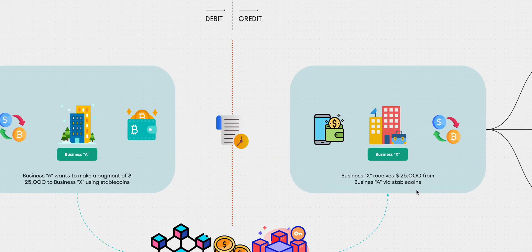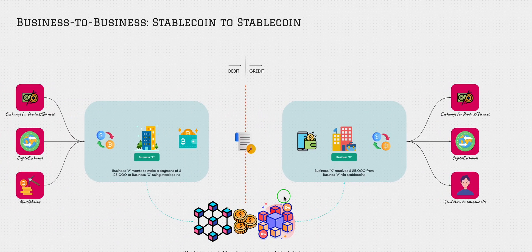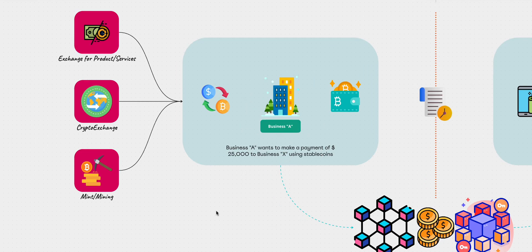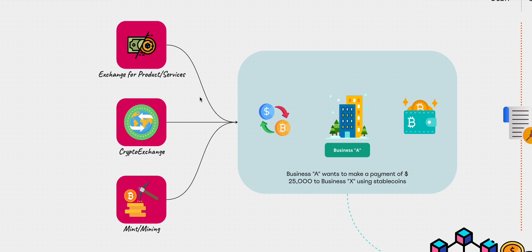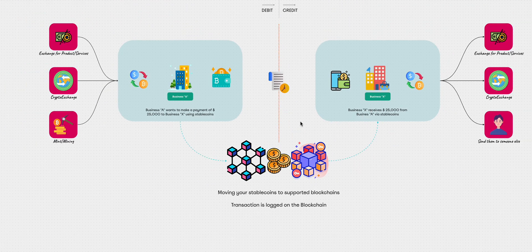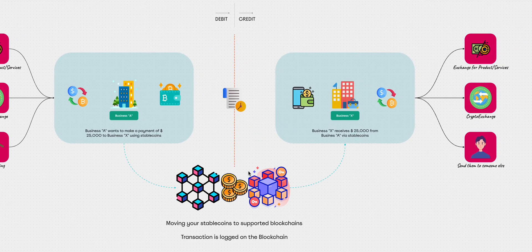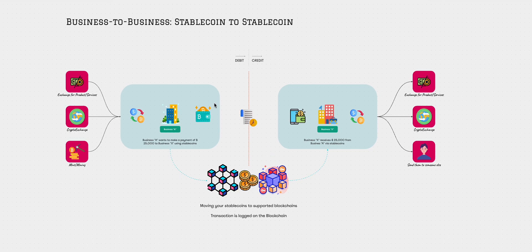Business A would send to Business B and they receive it. The receiving business can do a couple of things: exchange it for products and services, send the coin to someone else, or go to a crypto exchange and sell the stablecoin to get fiat back. One of the biggest issues here is that on the blockchain, you really don't know if the wallet you're receiving from is a trusted wallet — it's not a dirty wallet or from a nefarious party. Businesses tend to ignore that and say, 'I got the coins, I'm going to send them across. End of story.'